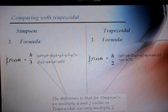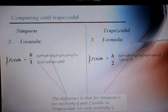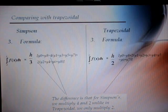The difference between Simpson's and trapezoidal would be that for Simpson's rule, we multiply 4 and 2. Unlike in trapezoidal, we only multiply by 2.